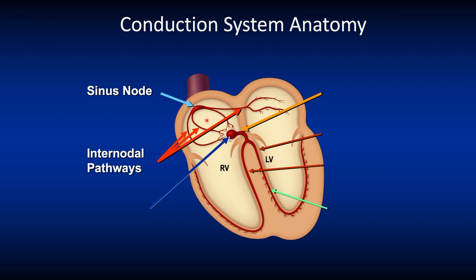You have your Anterior Internodal Pathway which arises at the Cranial End of the Sinus Node. It divides into branches: one to the Left Atrium called the Bachmann's Bundle, and the other along the right side of the Intra-Atrial Septum to the AV Node.